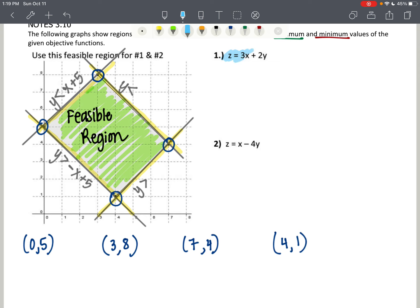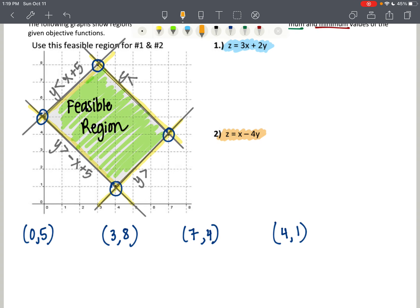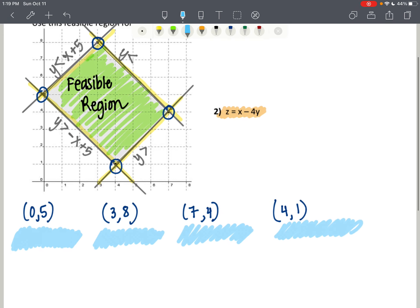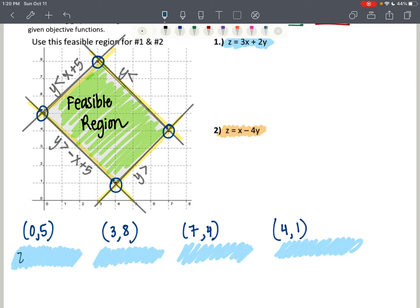I'm going to be looking at this objective function first, and then I'll follow it up with this second one. What we want to do is we want to put our x value and our y value into the objective function. So we're going to do this for each ordered pair. For our first objective function, we've got z equals 3x plus 2y. And in place of x, we're going to put 0, and in place of y, we're going to put 5. So for this first ordered pair, we get 10. z equals 10.